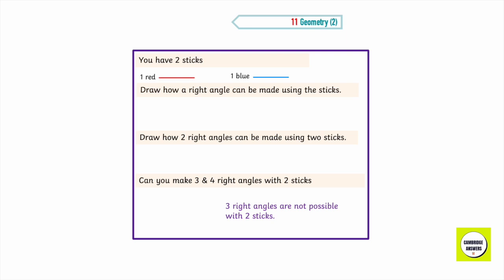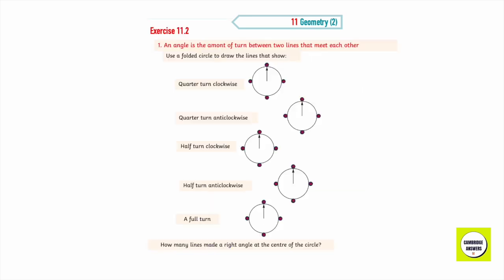You have two sticks — one red, one blue. Draw how you can make one right angle using the sticks. Draw how you can make two right angles using two sticks. Talk to your partner: can you make three and four right angles with two sticks? If you can, draw them. If you can't, write why not. We can draw four right angles with two sticks, but three right angles are not possible with two sticks.